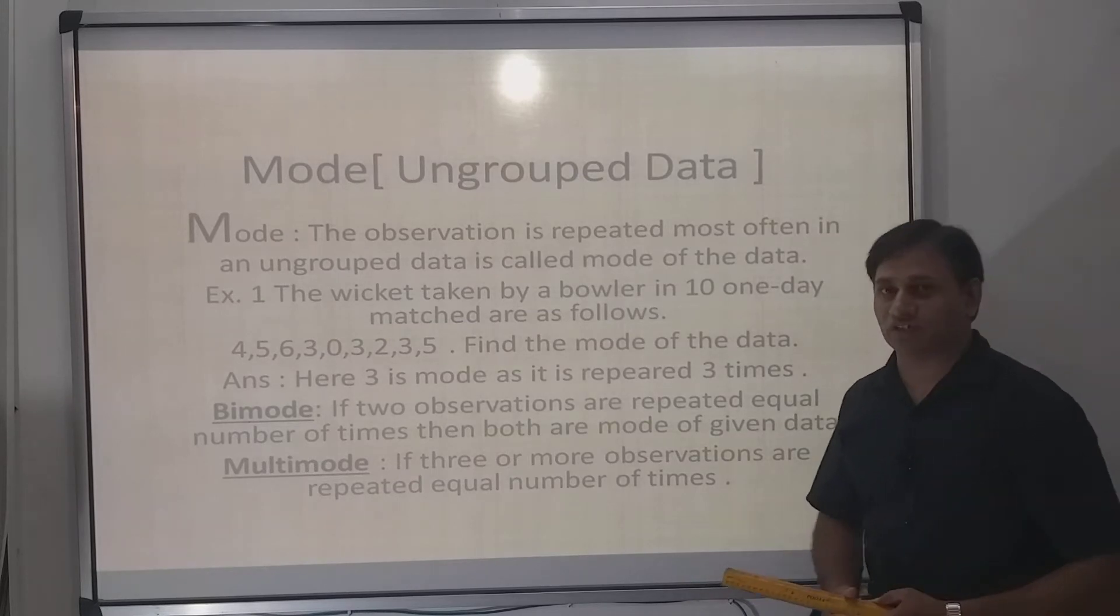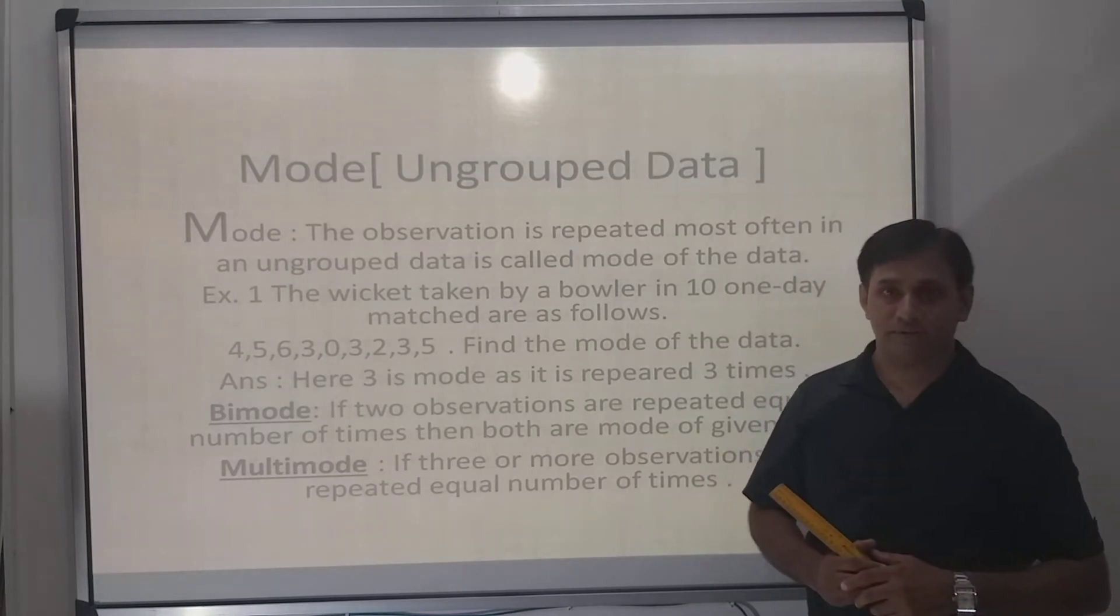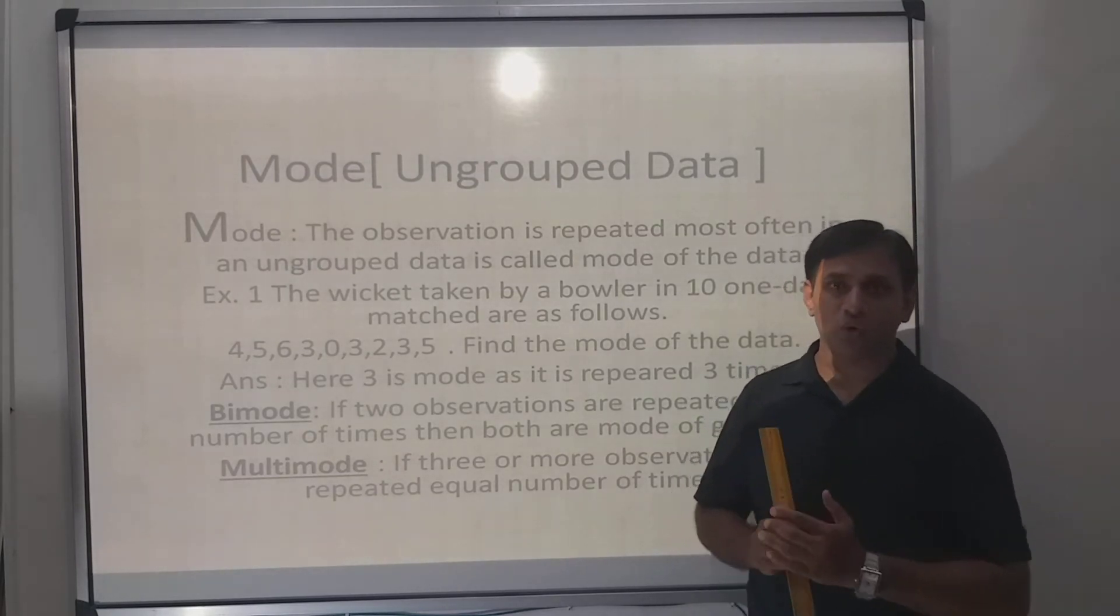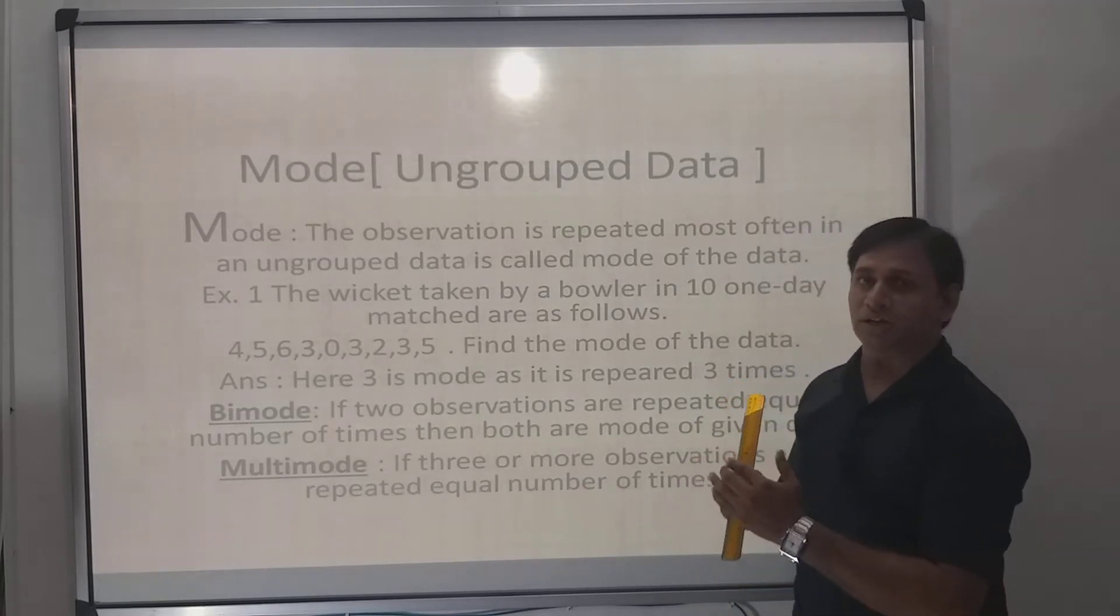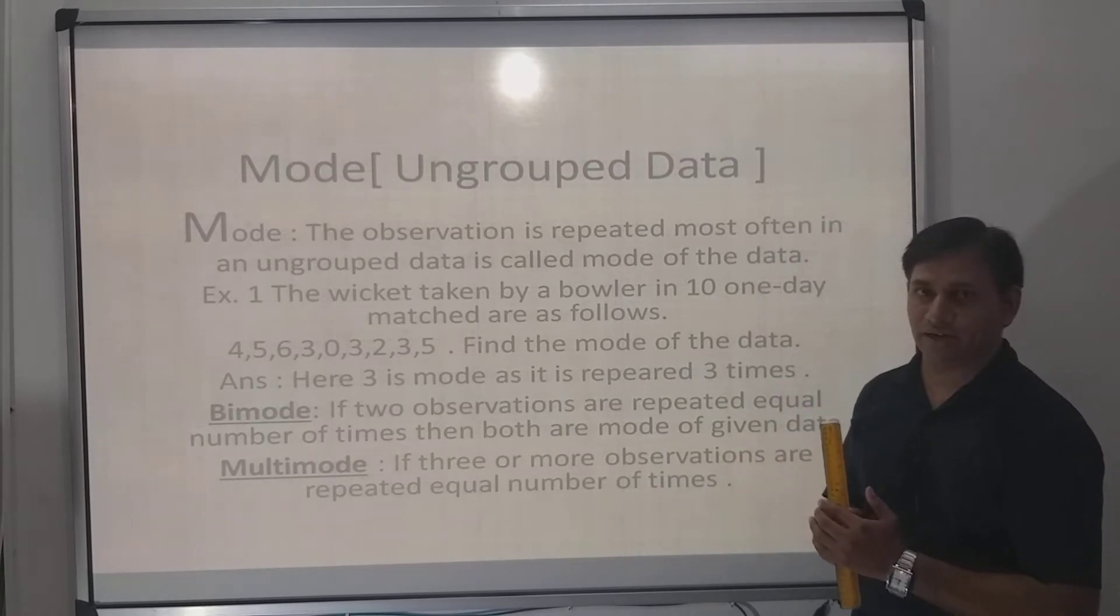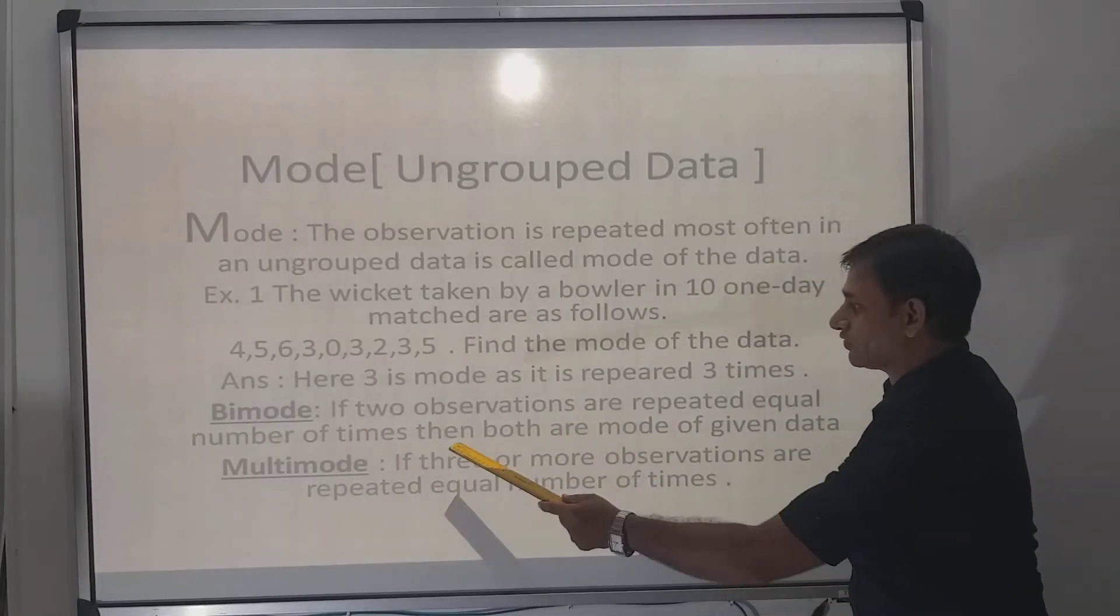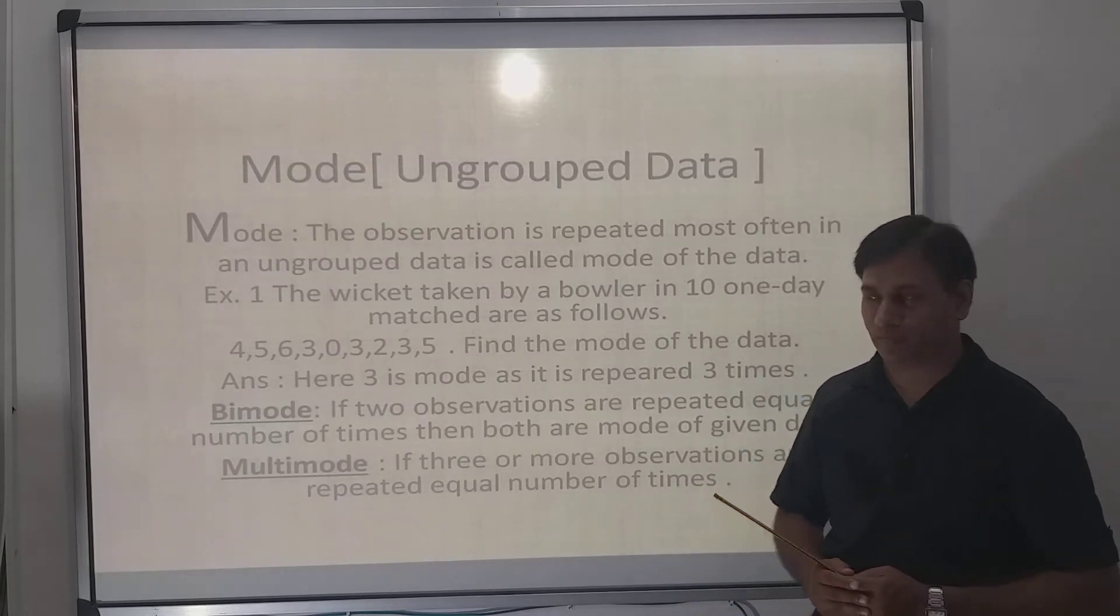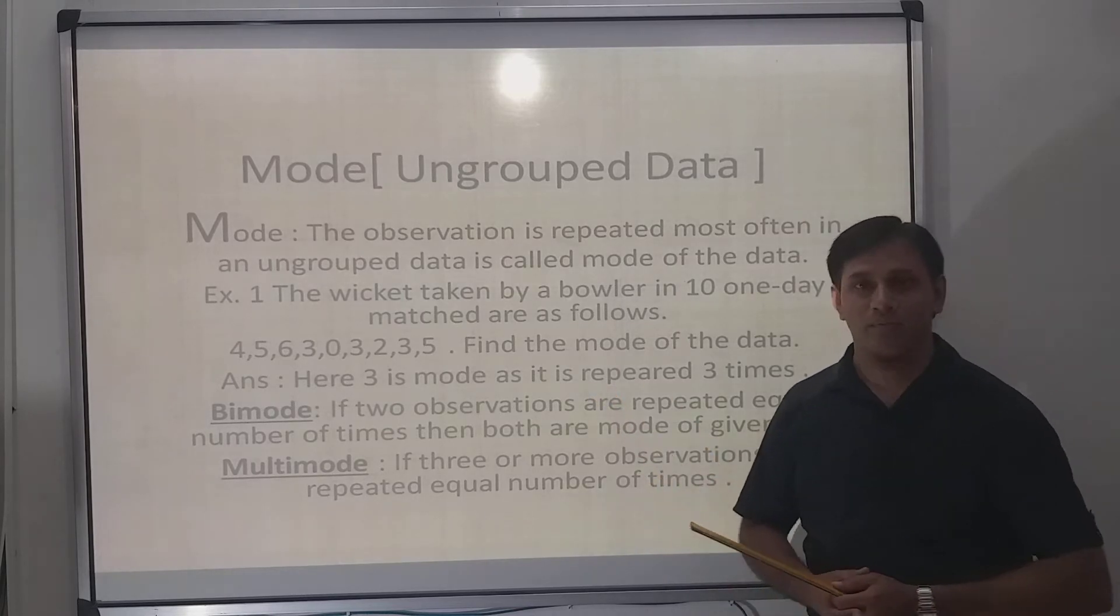Sometimes observations are repeated most times. If two observations are repeated equal number of times, then both are the mode of the given data. We can say bimode. Suppose here 3 is repeated or 5 is repeated three times, so 3 and 5 both are mode.